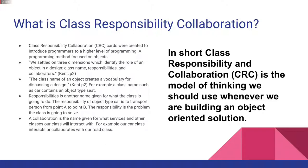The Class Name of an object creates a vocabulary for discussing a design. For example, a class name such as a car contains an object type seat. Responsibilities is another name given for what the class is going to do. The responsibility of object type car is to transport a person from point A to point B. The responsibility is the problem of the class or is the problem the class is going to solve.